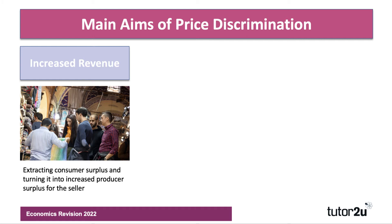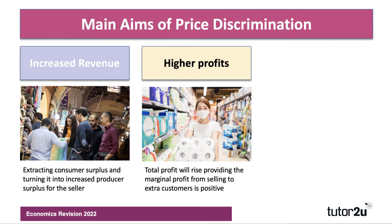Revenue is a key aim, and linked with that is profit — the bottom line. The key point here is that you can make higher profits using this strategy, providing the marginal profit is positive. Marginal profit is the profit on the next unit you sell, or the profit from the next transaction with another customer. So it may be the case that you're offering some cheap discounted travel tickets to students — that would be price discrimination. You can still make a profit on those groups, providing the revenue you're getting is greater than the marginal cost of selling to that group.